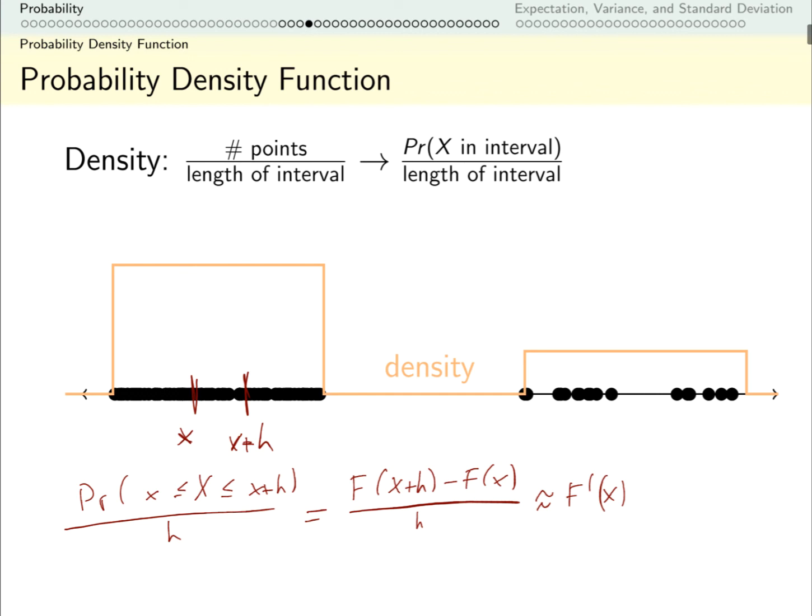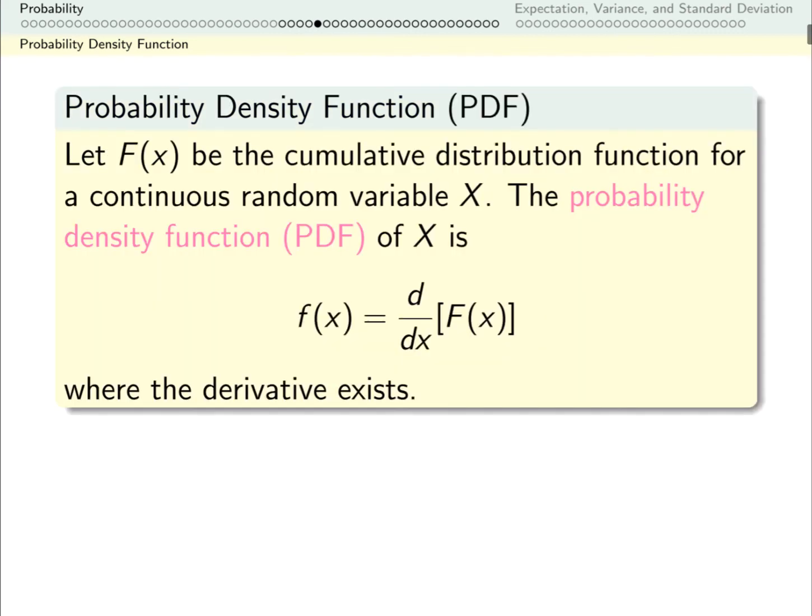So again, the odds of hitting, say, 1.2 are zero. But I can say that near 1.2, I'm less likely to find something than near, say, negative one. That's what the probability density function allows us to express. It's the derivative of the cumulative distribution function, which we've been writing as capital F. And so we usually write the probability density function as lowercase f. And in fact, this is how we're going to define the probability density function. I'm going to just define it as the derivative of the cumulative distribution function where it exists.